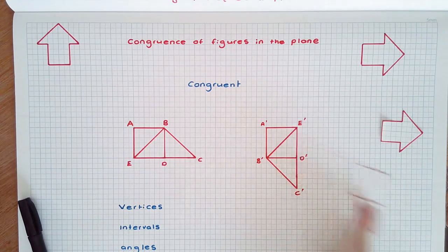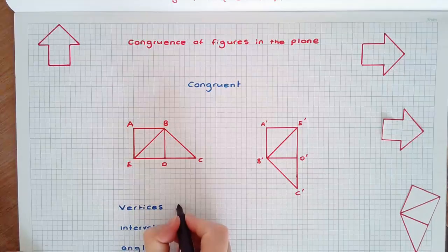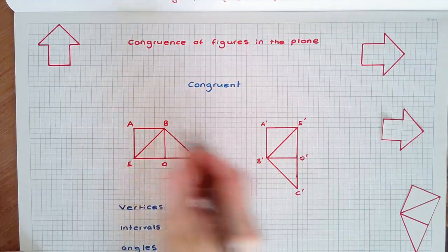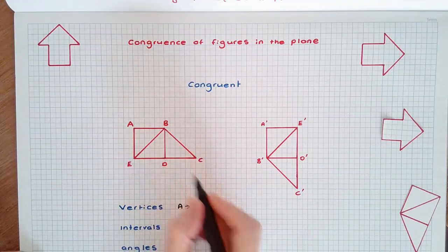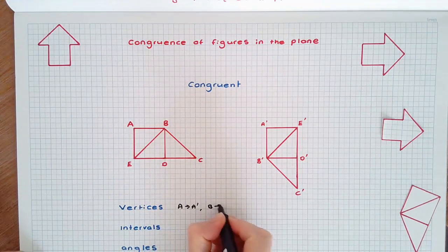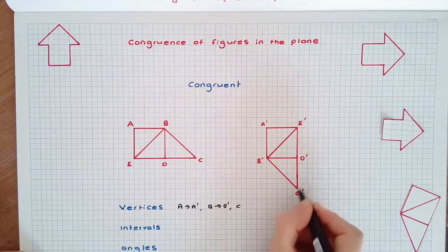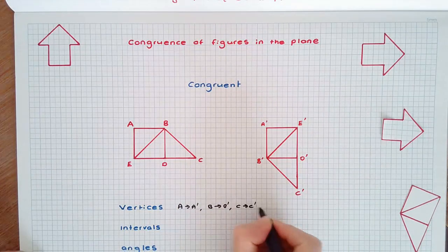The vertices A has become A dash, B has become B dash, C has become C dash, etc.